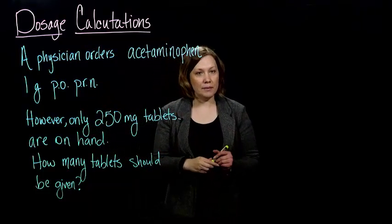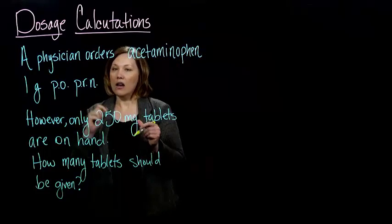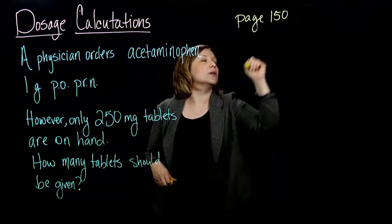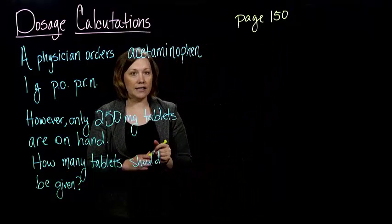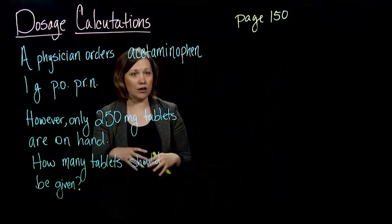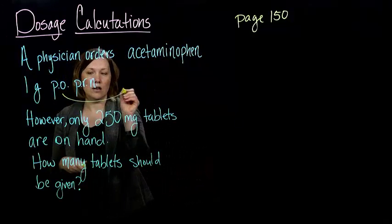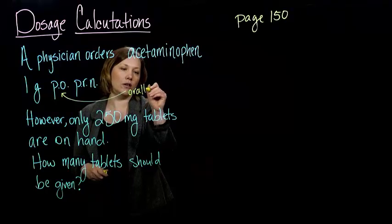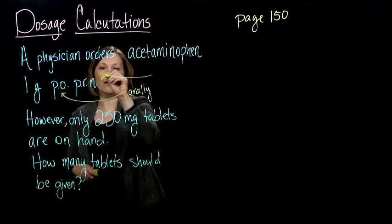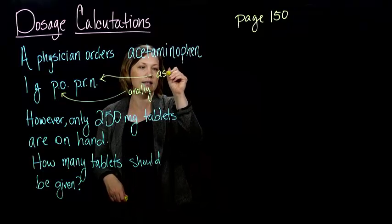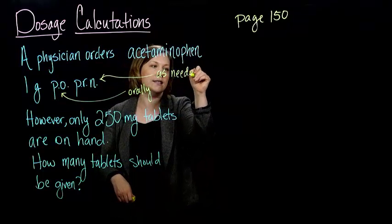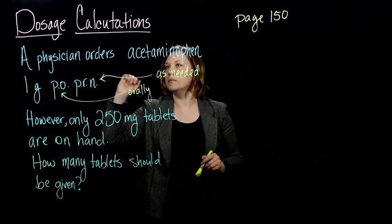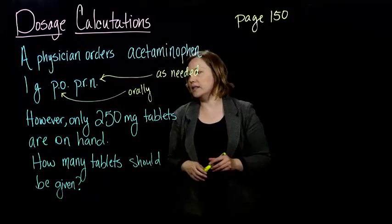On page 150 of your textbook, there is a chart that tells you what all these abbreviations are. If you look on there, you'll see P.O. is for orally and P.R.N. is for as needed, so on an as needed basis. So a physician has ordered one gram orally on an as needed basis.